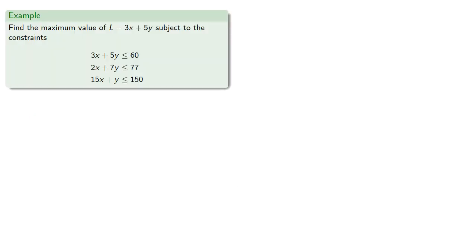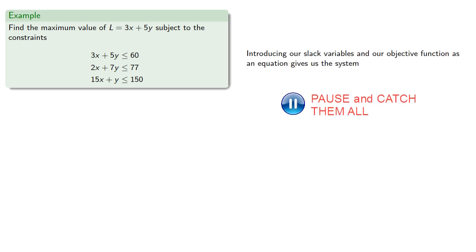For example, consider this problem. Introducing our slack variables and our objective function as an equation gives us the system. Our initial tableau is.